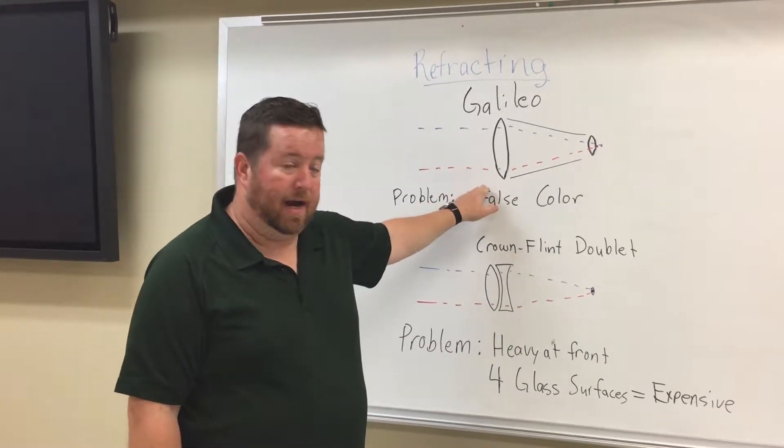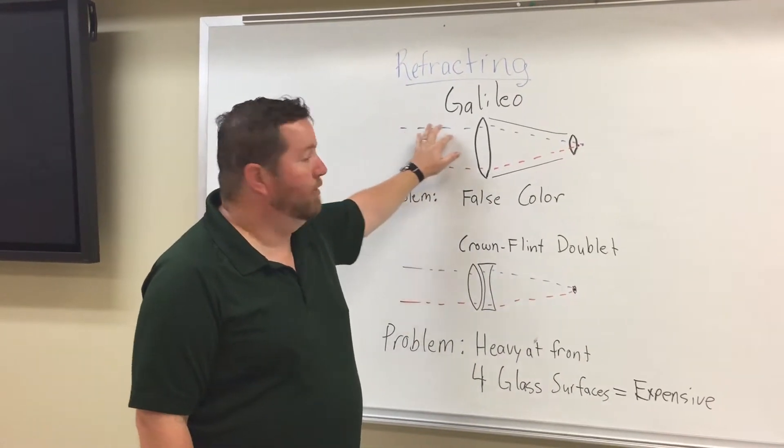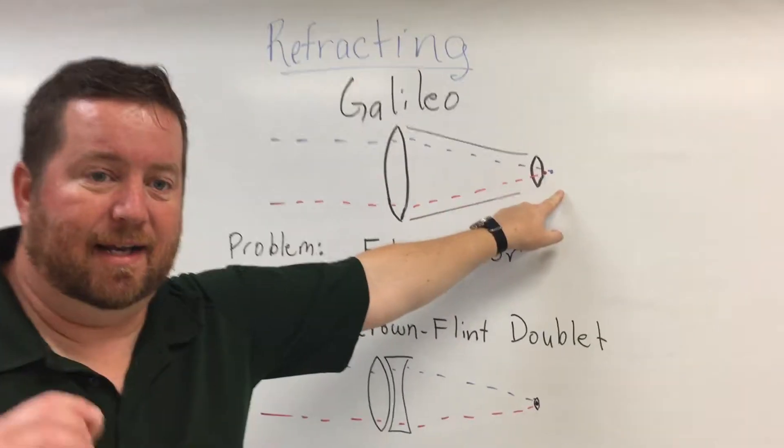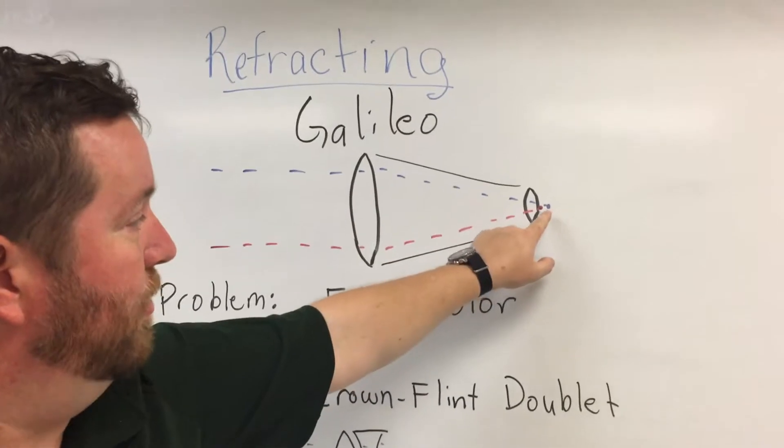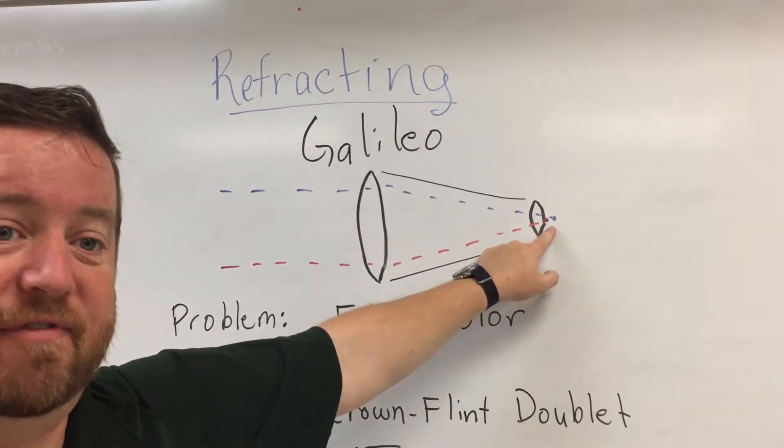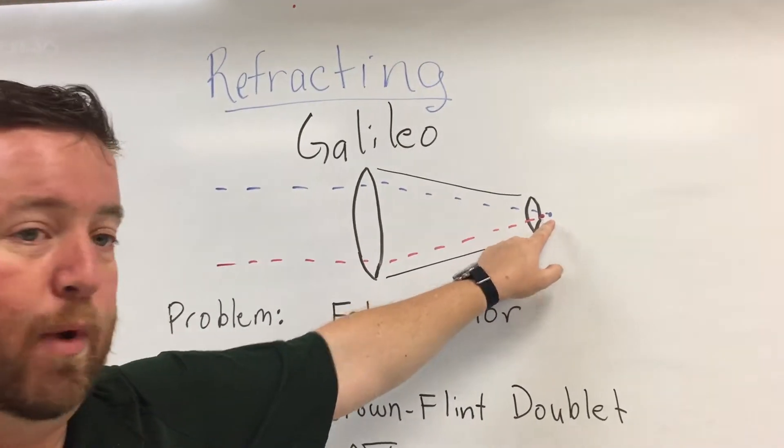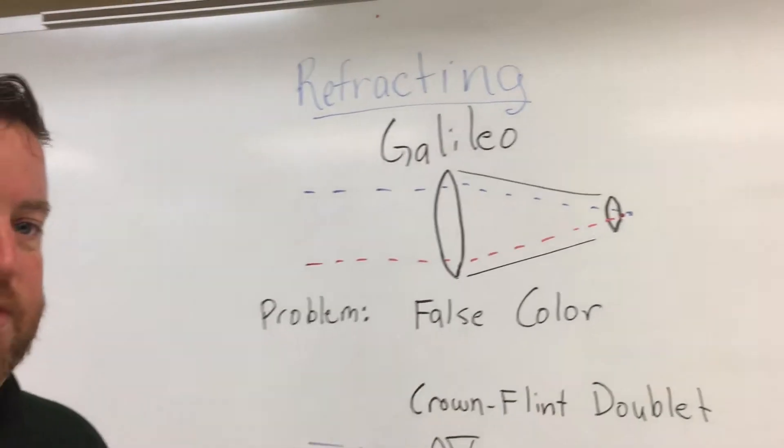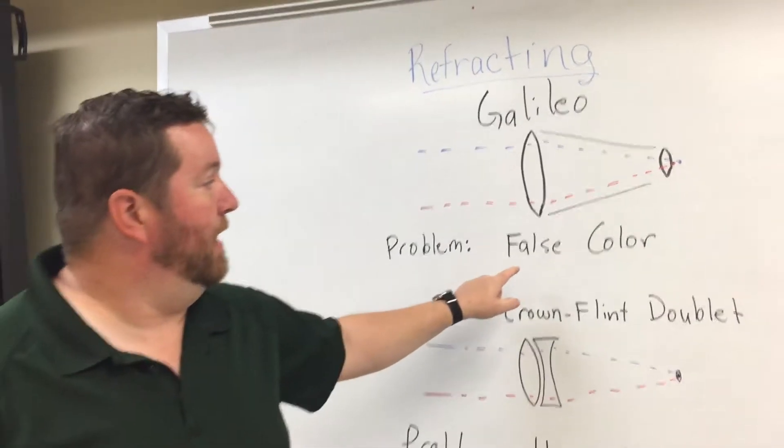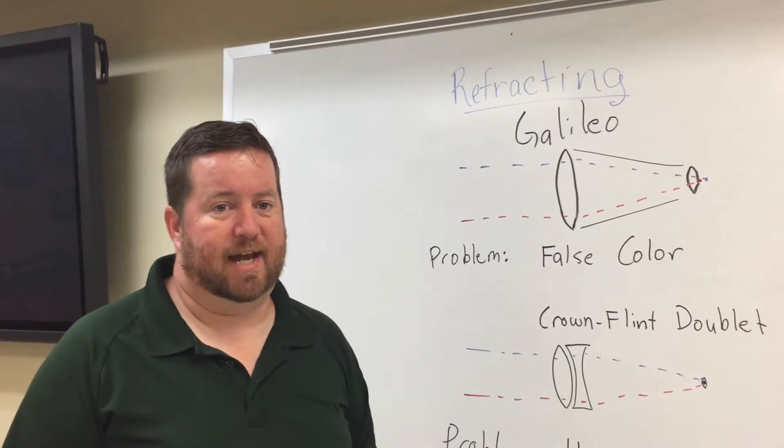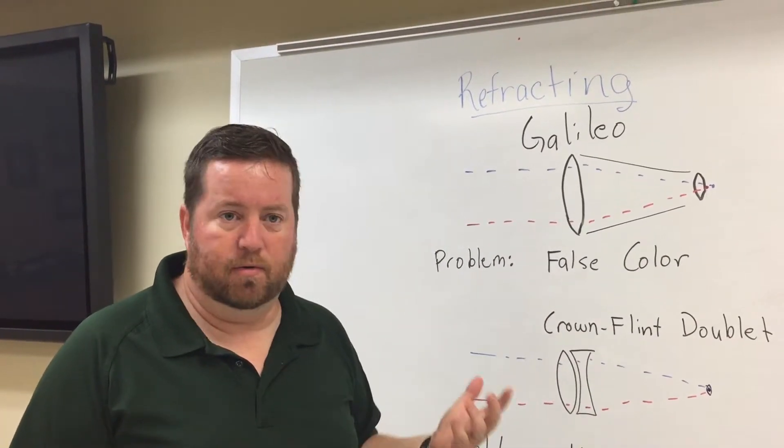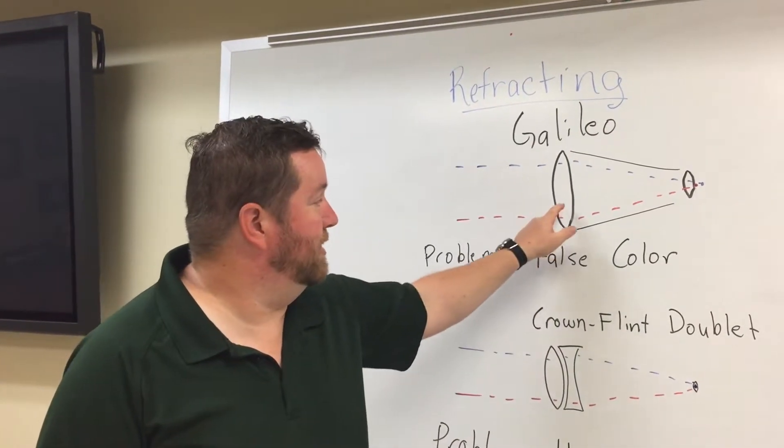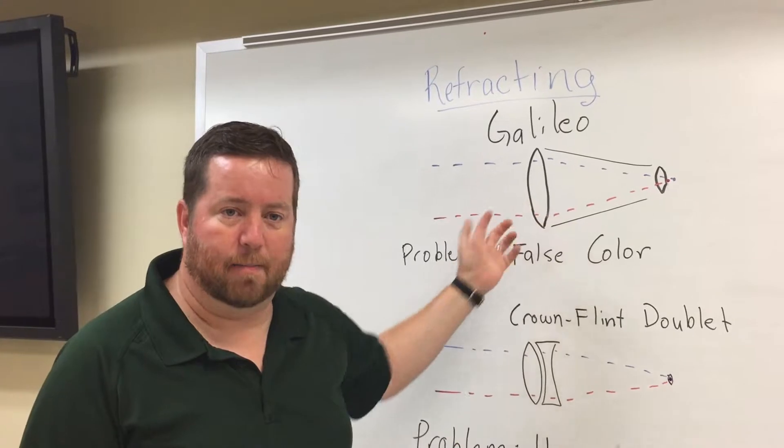However, Galileo's design, if you look at the blue light and the red light, the blue light and the red light would be bent at slightly different angles. And so the blue light and the red light would come to focus at a different point. You can call this problem false color. The fancy term is chromatic aberration. But this false color led his critics to say that the moon craters that he saw could also be imperfections because maybe the craters were actually bubbles in the glass.